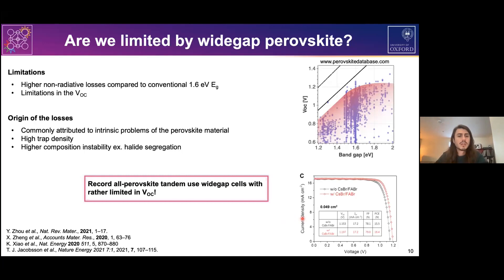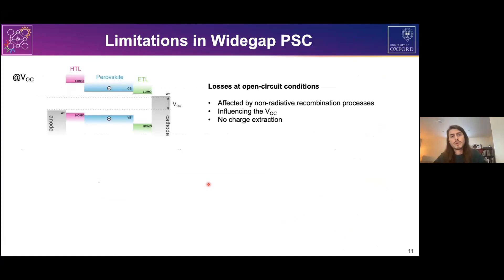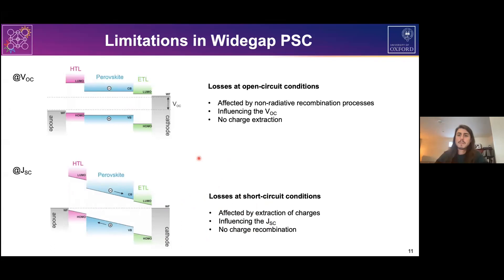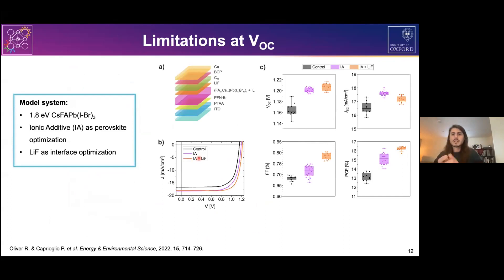During this talk I want to focus on losses at two operational conditions. The first is losses at VOC condition, where we have no extraction of charges and all recombination processes directly influence the VOC. The second is the JSC condition, where ideally we have full extraction of charges and no recombination. Any losses observed here would influence the JSC of our device.